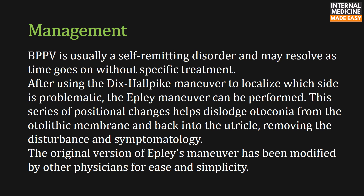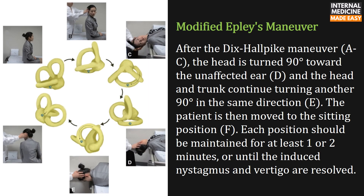The original version of the Epley maneuver has been modified by other physicians for ease and simplicity. In the modified Epley maneuver, after the Dix-Hallpike maneuver shown in steps A to C, the head is turned 90 degrees toward the unaffected ear, shown in step D, and the head and trunk continue turning another 90 degrees in the same direction, shown in step E. The patient is then moved to the sitting position, shown in step F. Each position should be maintained for at least one to two minutes, or until the induced nystagmus and vertigo are resolved.